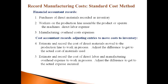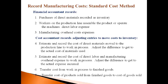The cost accountant moves the cost of direct material, direct labor, and manufacturing overhead to work in process using an estimated amount, since the actual cost of making products is not tracked to individual products. The estimated amounts must be adjusted to actual amounts in total for the company. These costs are then moved to finished goods when the product is complete, and then on to cost of goods sold when products are sold.